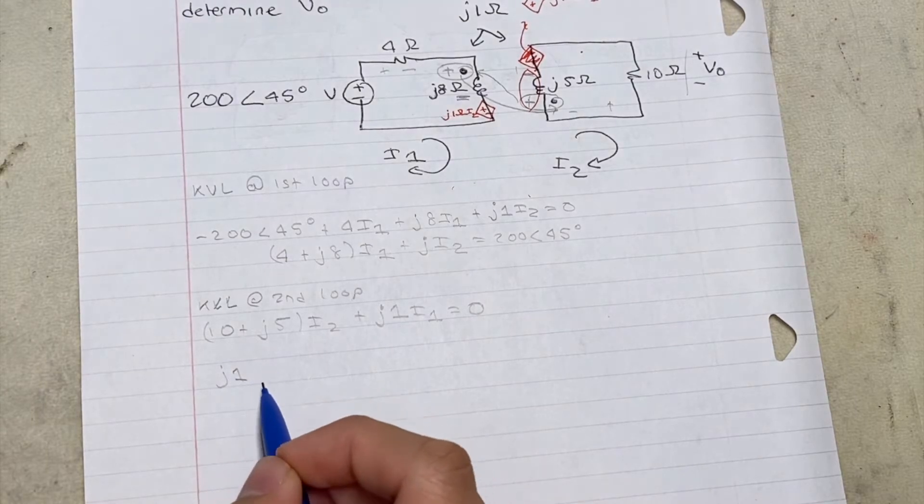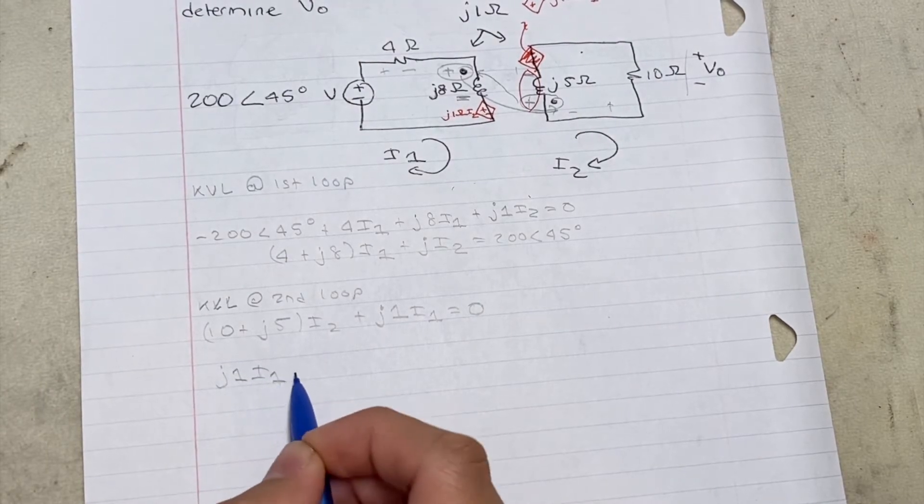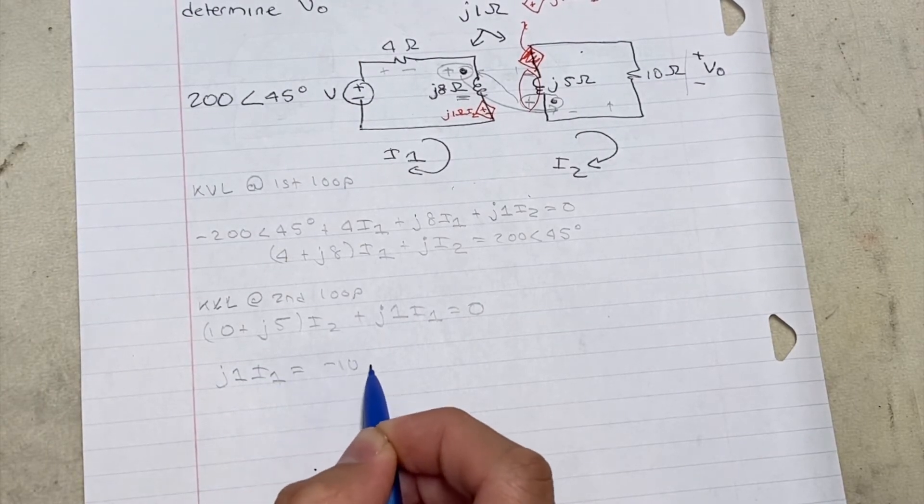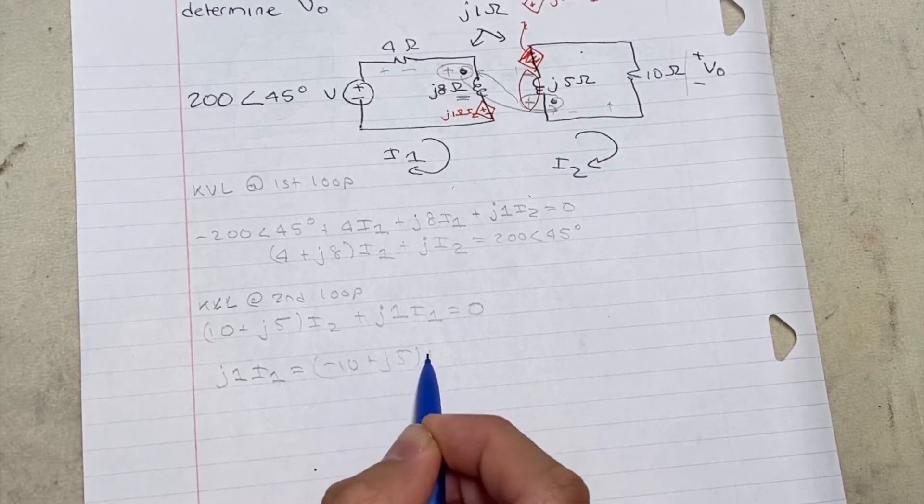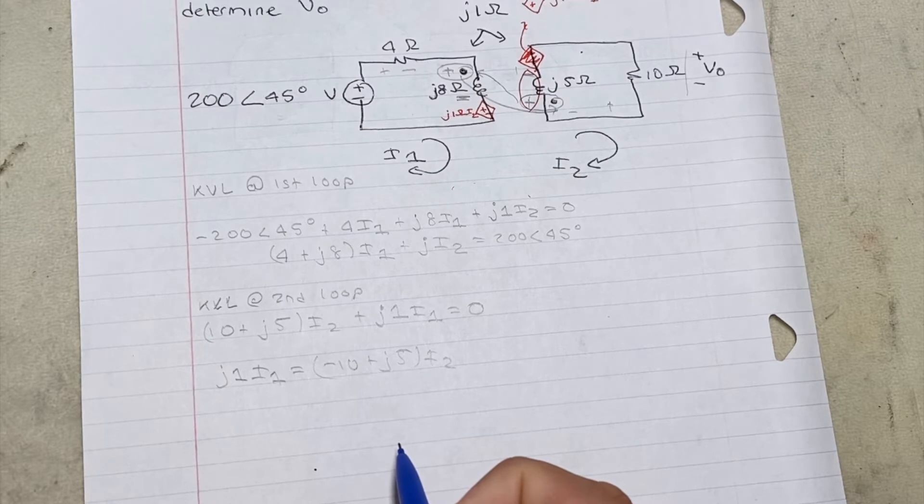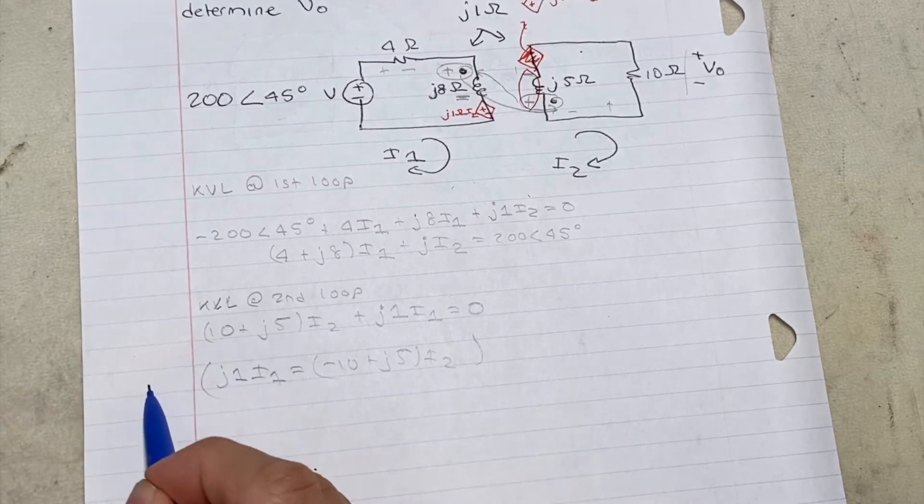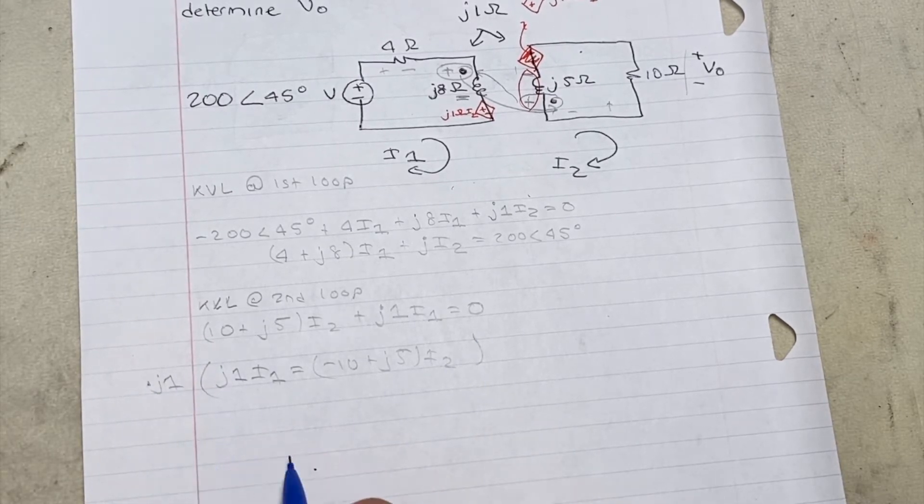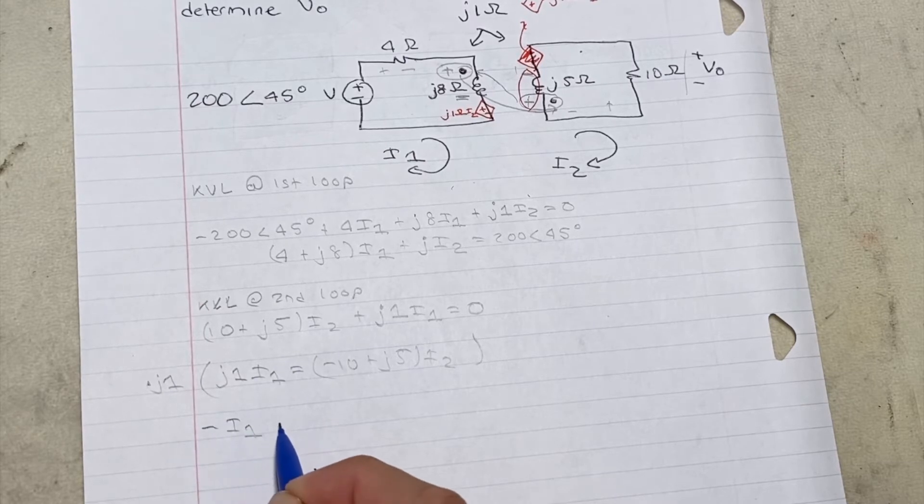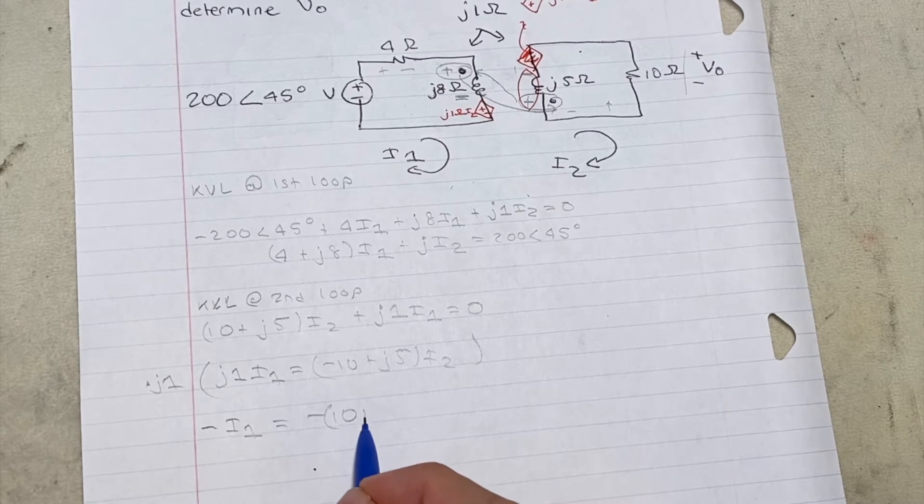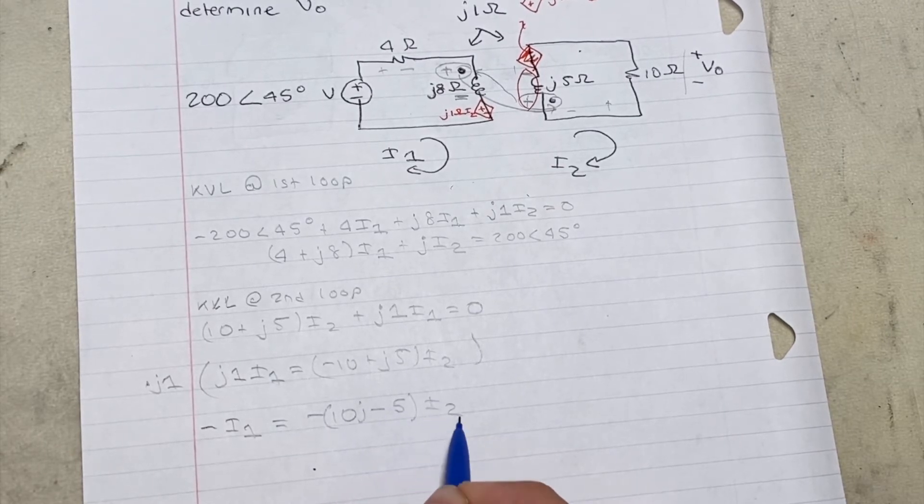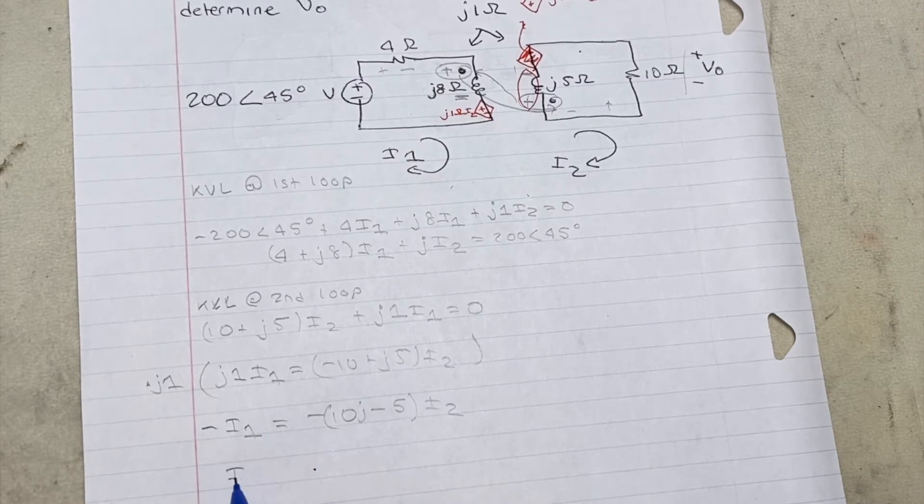Now I'm going to simplify the equation by writing J1I1 is equal to negative (10 + J5) times I2. I'm going to multiply this entire equation by J1. And if you recall, J has a value of the square root of negative 1. So the equation will simplify to negative I1 equals negative times (10J - 5) times I2.